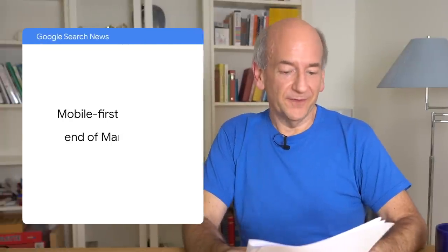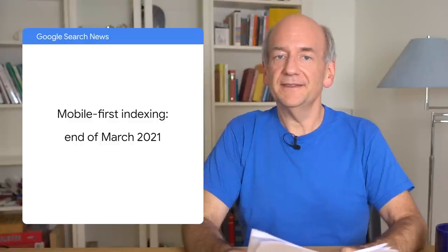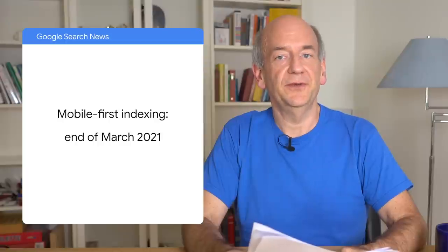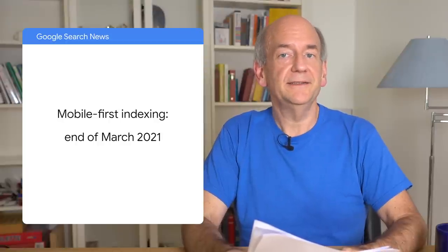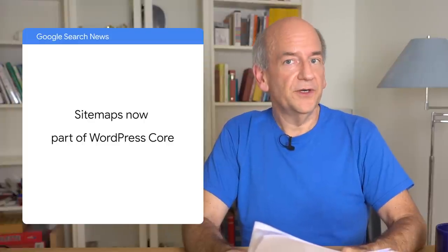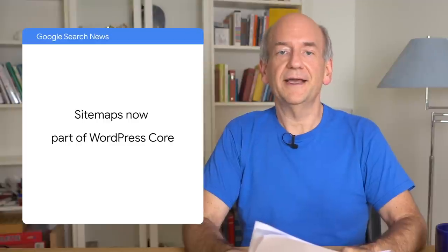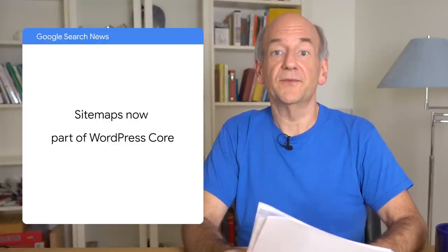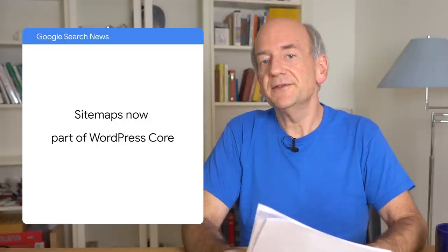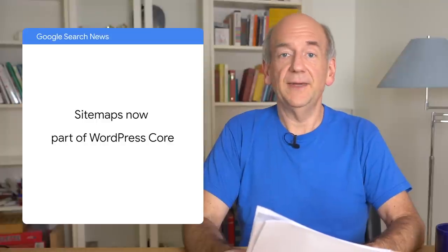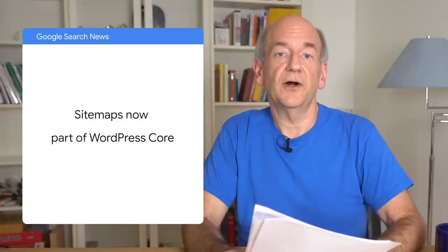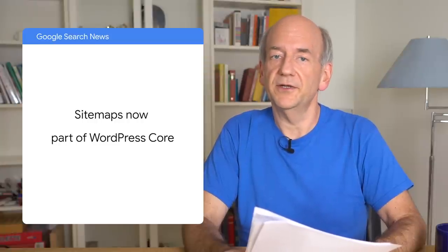We mentioned mobile-first indexing last time. Given the circumstances, we've decided to change the final date to the end of March 2021. This hopefully gives those remaining sites a bit more time to make appropriate changes. If your site is using WordPress, we're happy to let you know that sitemaps are now a part of WordPress core. This means that any website using WordPress will be able to submit a sitemap file by default. Sitemaps are broadly supported by search engines and help crawling and indexing of new and updated content on your website.